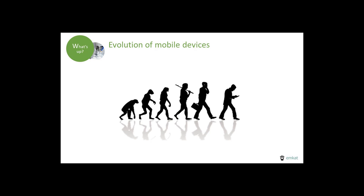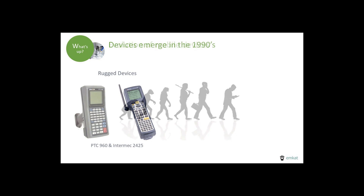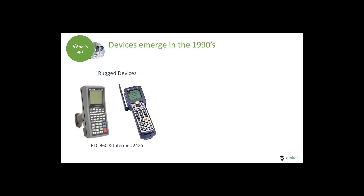Let's look at some of the early DOS devices. Maybe some of you remember the Telzon PTC 960 or the Intermec 2425 — examples of popular devices in the late 90s and early 2000s. At that time, terminal emulation dominated in the warehouse and wireless standards were still very much in flux.